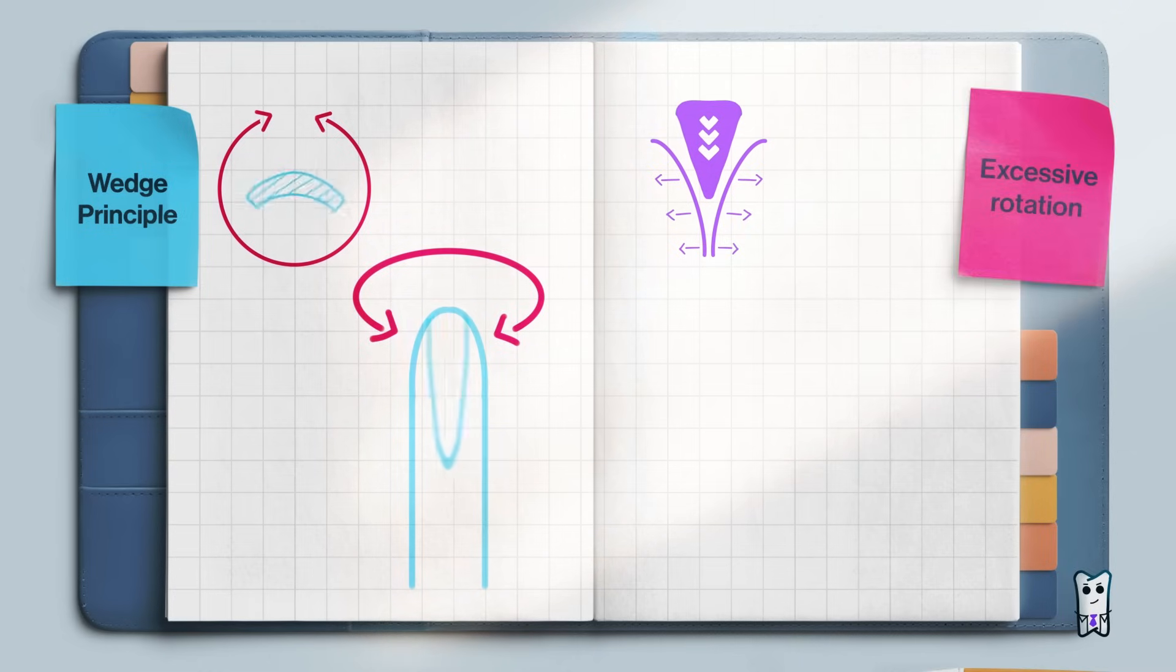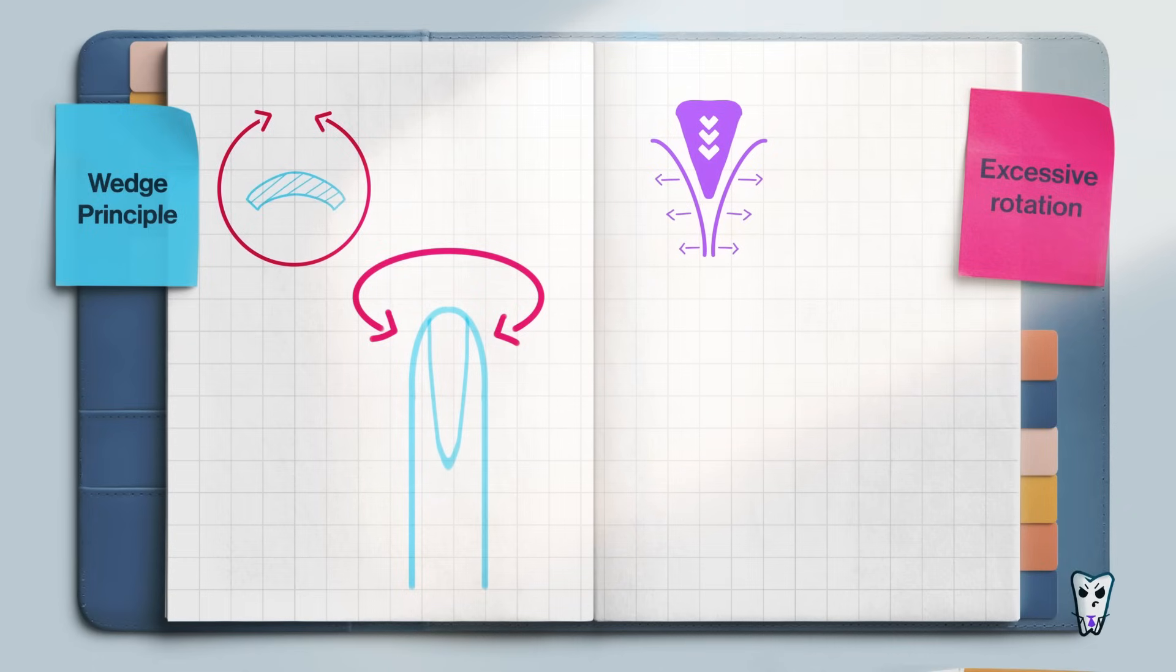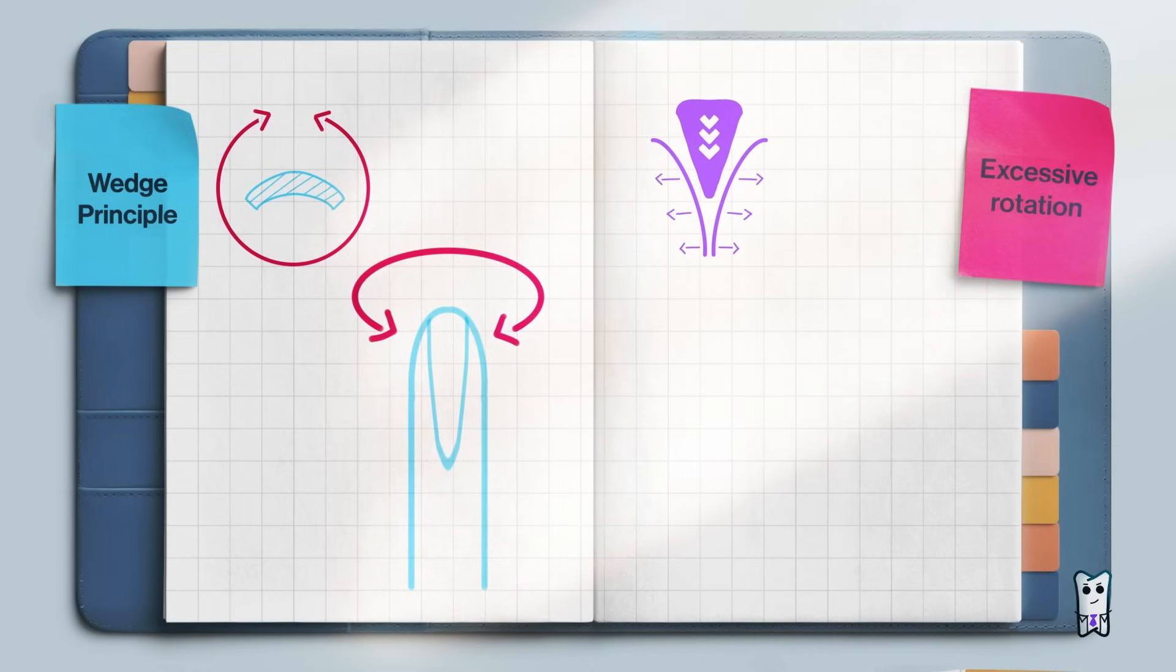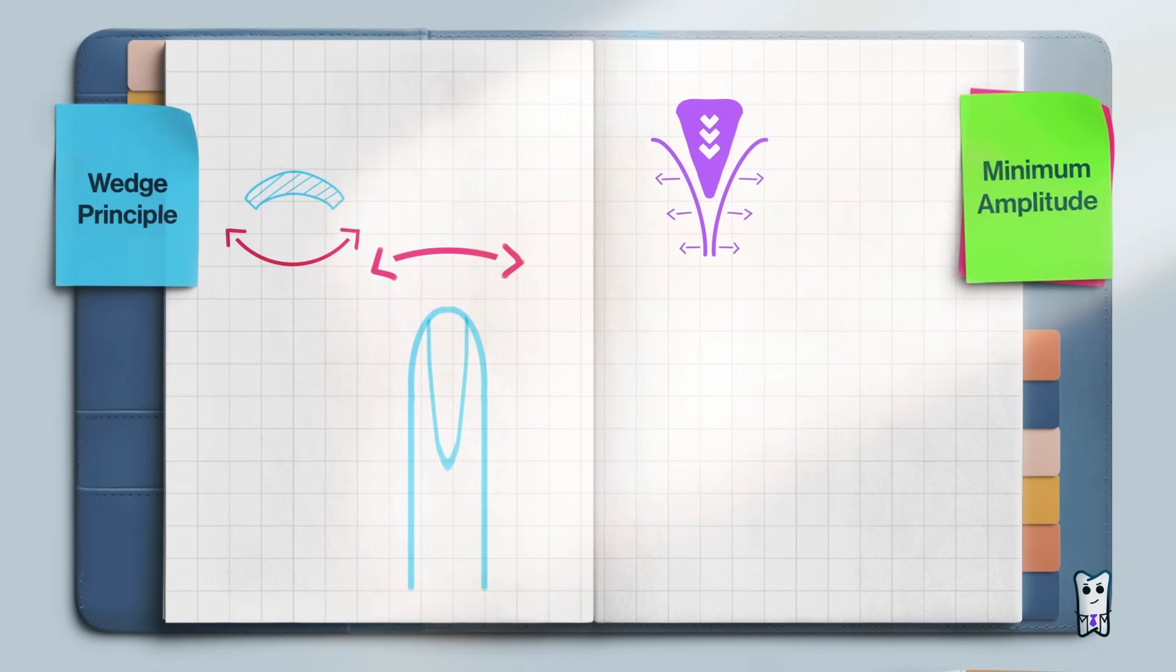The most frequently observed mistake is the excessively large amplitude of rotation of the elevator while inserting it in depth. Since the periodontium is very narrow, the large amplitude does not allow the elevator to penetrate in depth and leads to scraping of the crestal bone. Because of this, rotational movements must be done with minimal amplitude.